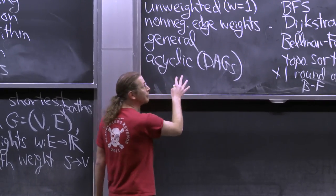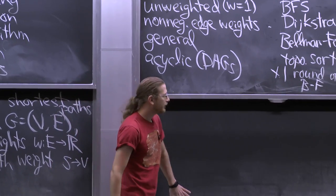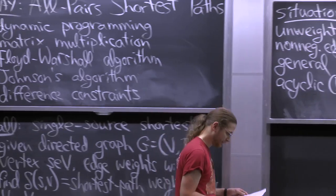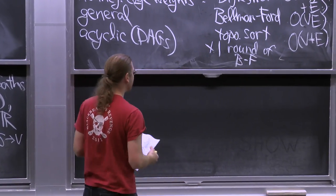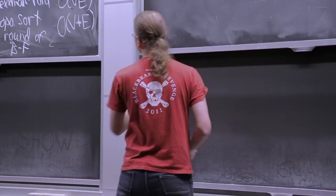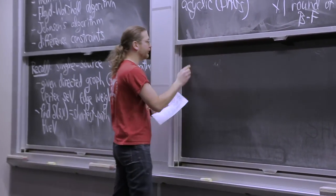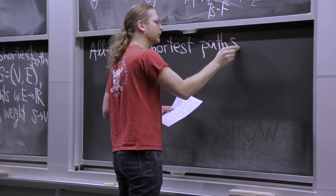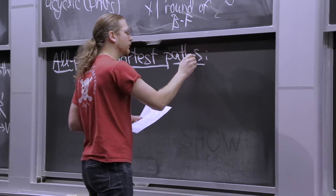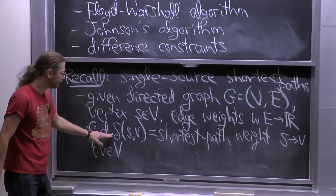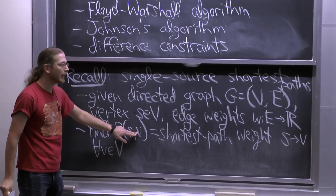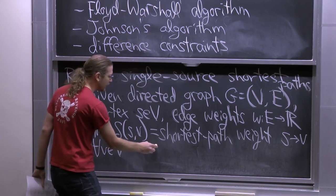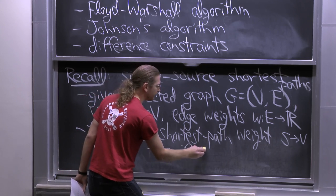These are the best algorithms we know for each of these cases — you saw the state of the art in 6.006. For all pairs shortest paths, we define the problem as follows. Delta(s, v) is the weight of the shortest path from s to v. It could be infinity if there's no path. And it could be minus infinity in the presence of negative weight cycles — if you can reach a negative weight cycle from s and then still get to v, the best way is to loop around that cycle infinitely many times.